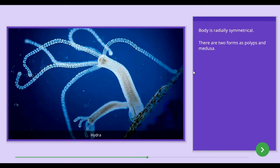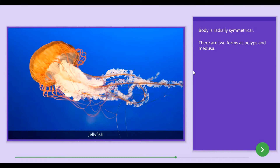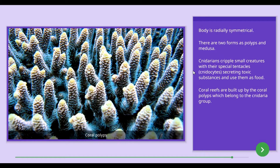Hydra belongs to the form of polyps and therefore leads a sedentary life, while jellyfish belongs to the form of Medusa. Cnidarians cripple small creatures by secreting toxic substances from special organelles on the tentacles. These special organelles are known as Cnidocytes. Coral reefs are built up by coral polyps, which belong to the Cnidaria group.